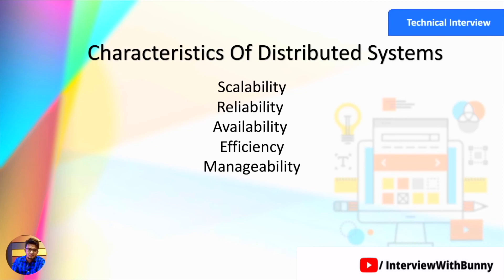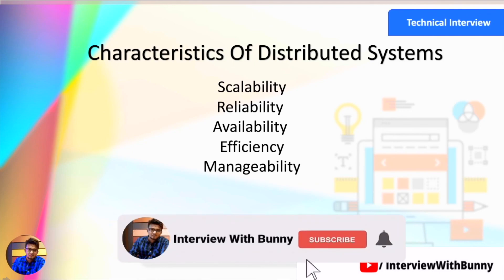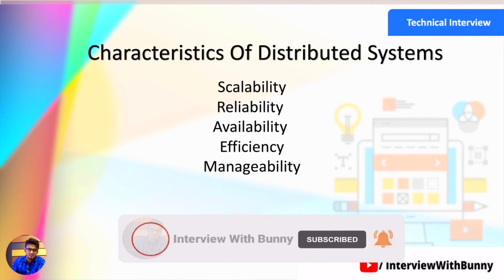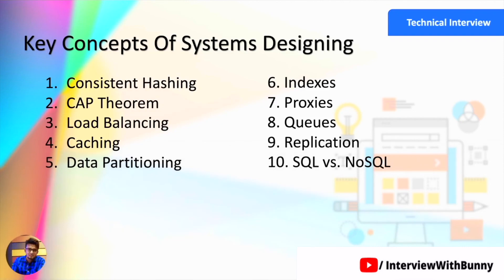Those were the key characteristics of a distributed system that you need to consider while designing a system: scalability, reliability, availability, efficiency, and maintainability. I hope you are clear with these concepts. If you found this video useful, please like and share it, and if you are new to my channel please subscribe and hit the bell icon. In my upcoming videos I will be discussing the key concepts of system design required for designing a complete system — see you in the next video, thank you.